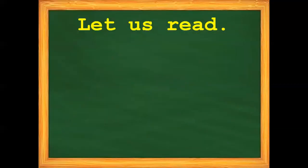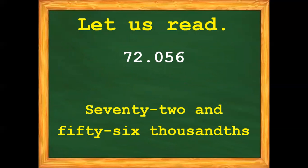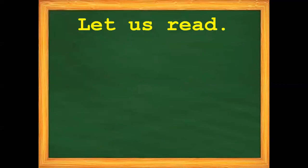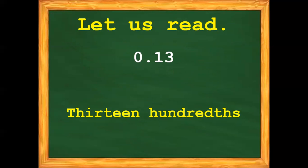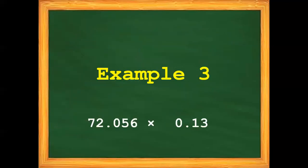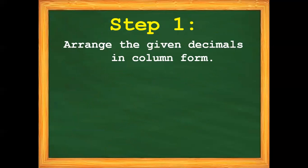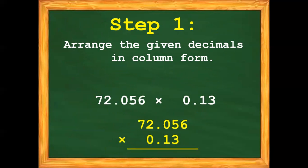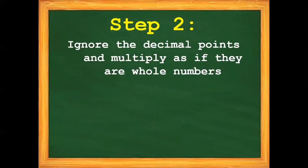Let's proceed with example number 3. But before that, let us first read the given decimal numbers. How do we read this decimal number? Very good — it is 72 and 56 thousandths. How about this decimal number? Very good — it is 13 hundredths. Now let's multiply. Step number 1: Arrange the given decimals in column form. Step number 2: Ignore the decimal points and multiply as if they are whole numbers.